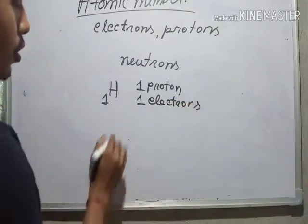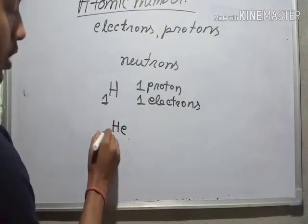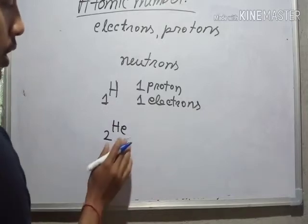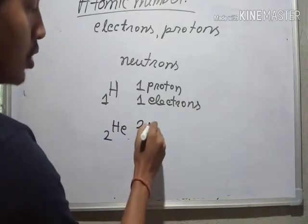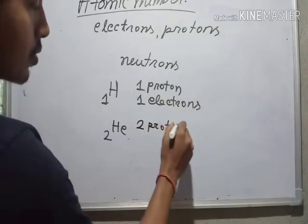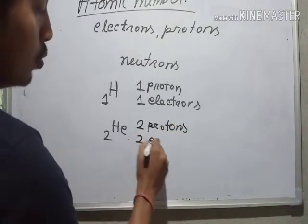If you consider helium with atomic number two, then there are two protons and two electrons.